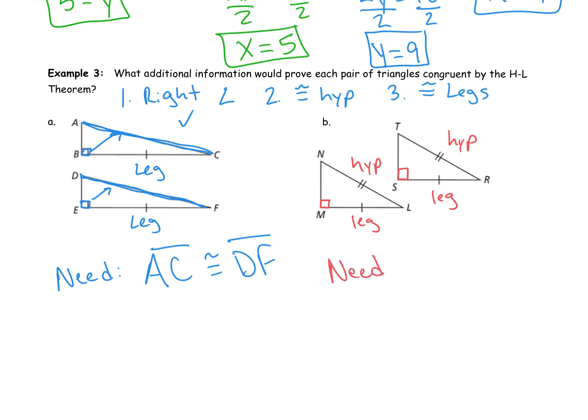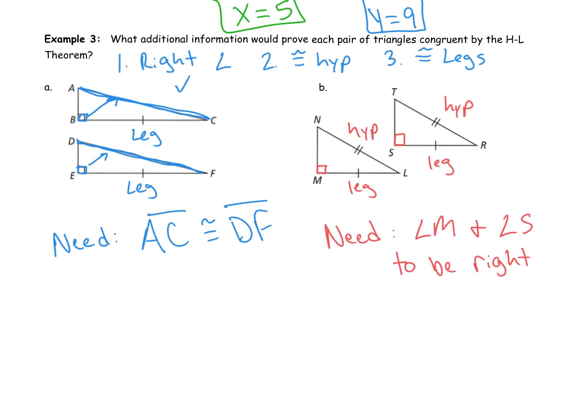What are those two angles there? Well, you could say NML, but since they're separate triangles, we can just say angle M. And what's the other angle in the second triangle? Angle S. Angle S. We need angle M and angle S because they're the two separate angles in the two separate triangles. We need those to be right angles. So, what I'm going to put is need angle M and angle S to be right. We need these to be right angles. We need those two angles to be right angles so that we actually have right triangles.